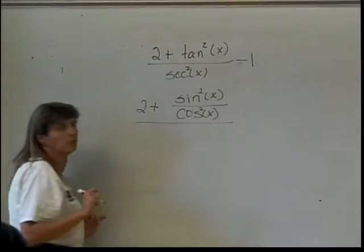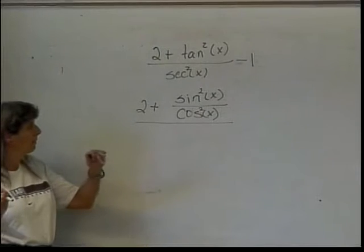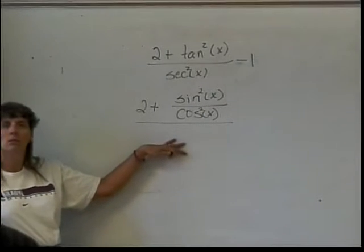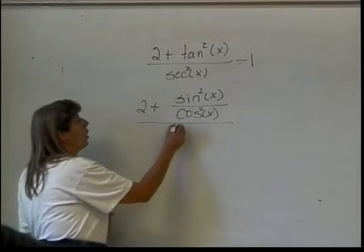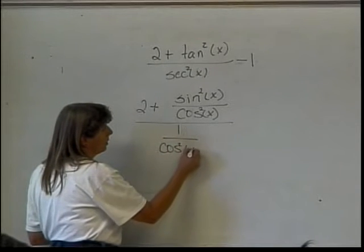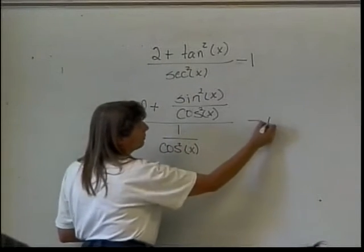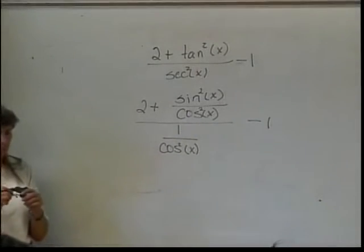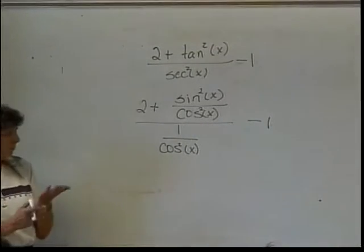Now, I'm going to divide by what? 1 over cosine squared of x, and let's not forget that I still have this minus 1 out there.